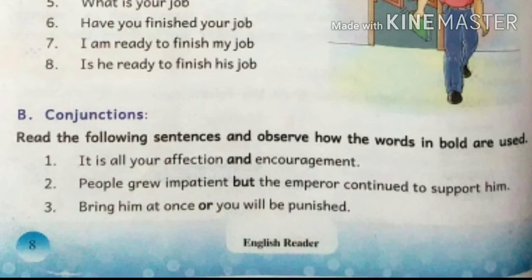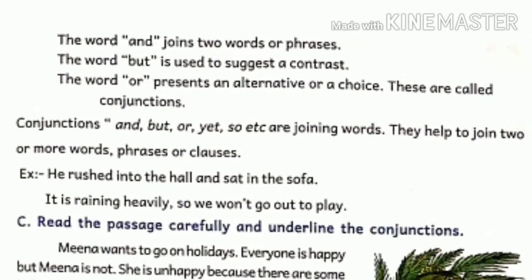Number two: 'People grew impatient but the emperor continued to support him.' Here 'but' joins two clauses — 'but' is a conjunction used to suggest a contrast. Number three: 'Bring him at once or you will be punished.' Here 'or' is a conjunction presenting an alternative or a choice. These are called conjunctions.